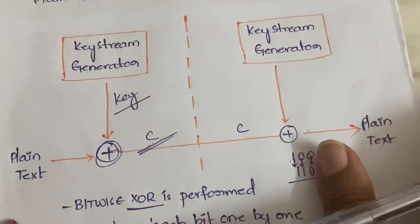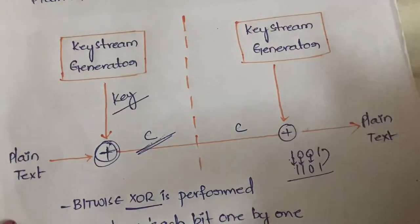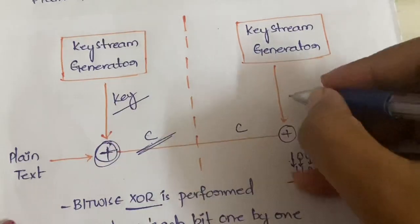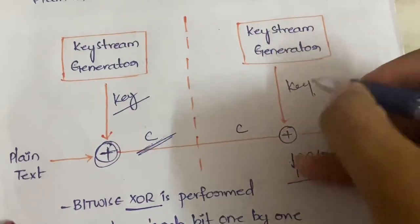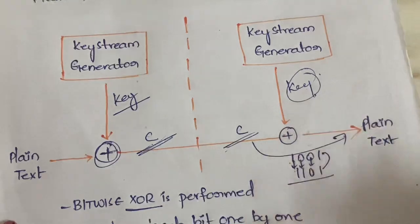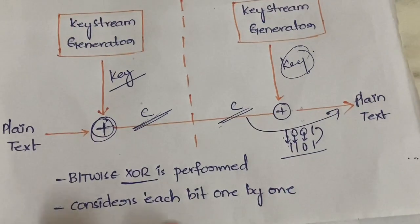As a result you get the cipher text. This is the encryption part. In the decryption part, you also have the same key stream generator through which you get the key, and with the help of this key and the cipher text you generate the plain text. That's all — very simple.